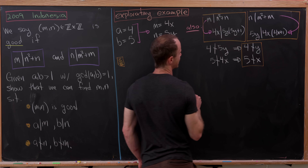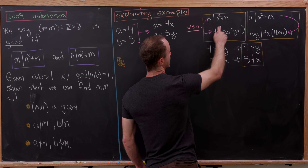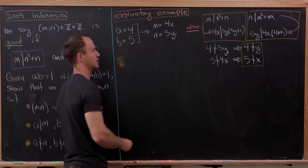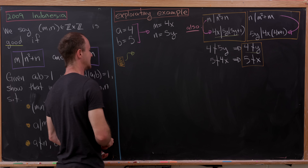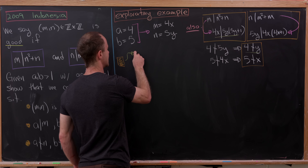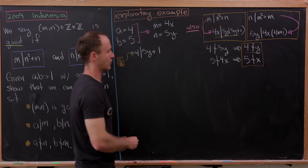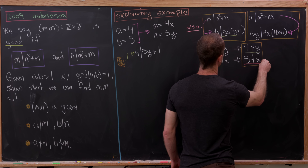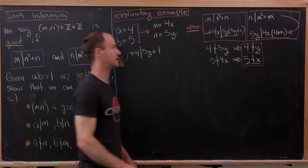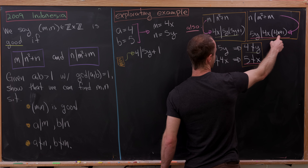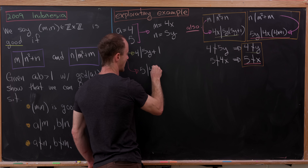Since 4 does not divide y and 4 doesn't divide 5, it must divide 5y + 1. So we get: 4 divides 5y + 1. Likewise, since 5 does not divide x and 5 doesn't divide 4, it must divide 4x + 1. So we also get: 5 divides 4x + 1.